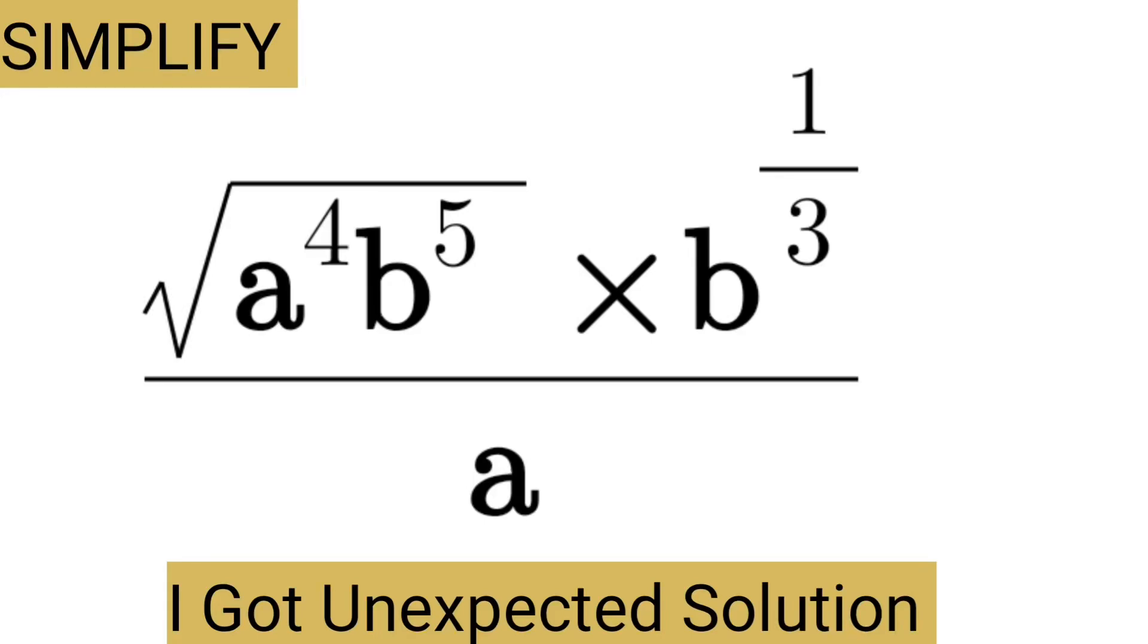Hello and welcome. Simplify square root of a power 4, b power 5, times b power 1/3 divided by a.